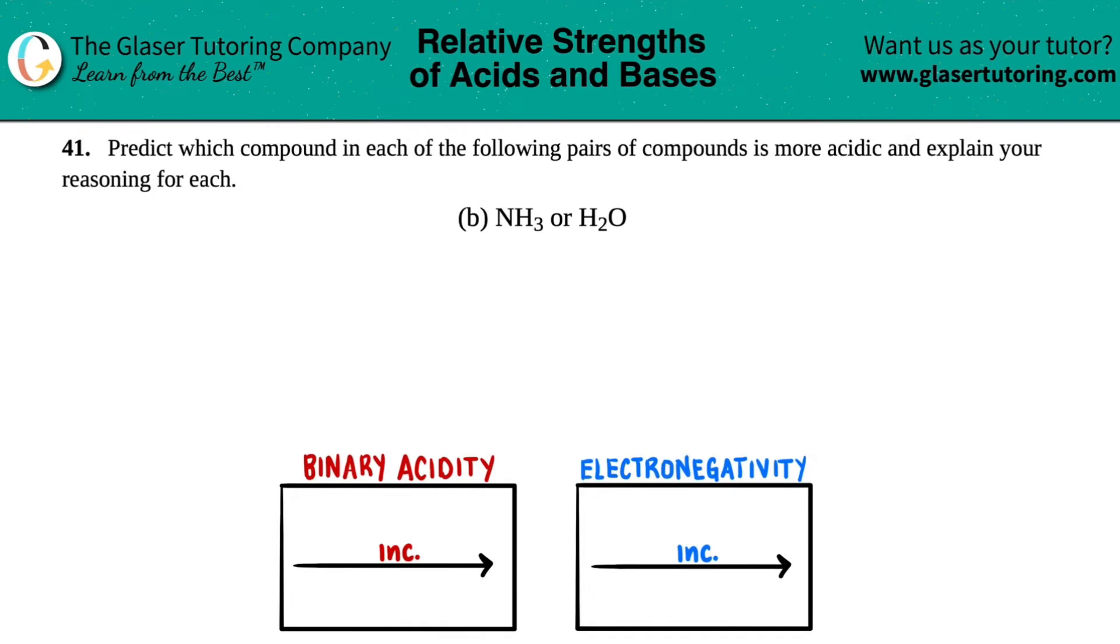Number 41: Predict which compound in each of the following pairs is more acidic and explain your reasoning. For letter B, we have to figure out which one is more acidic, NH3 or H2O. We need to put a general name to these types of acids.